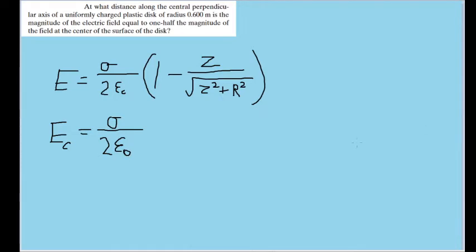Now, according to the problem, we're looking for wherever e is equal to 1 half of e sub c. And we can set this up as a ratio by writing it as e over e sub c equals 1 half.